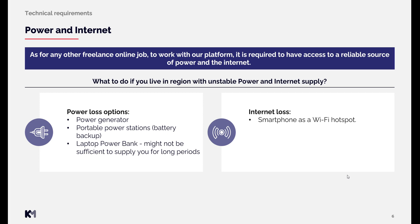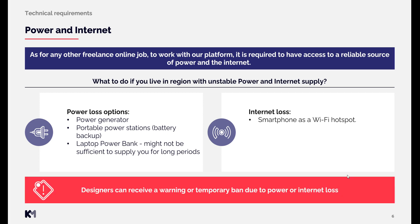Please note that leaving a project due to unexpected loss of power or internet can lead to receiving a warning on our platform. Three warnings within a 30-day period can lead to a temporary ban. You can read more about warnings and bans in the article linked in the video description. This system is implemented because we expect our designers to maintain a sustainable working environment so we can rely on their work.